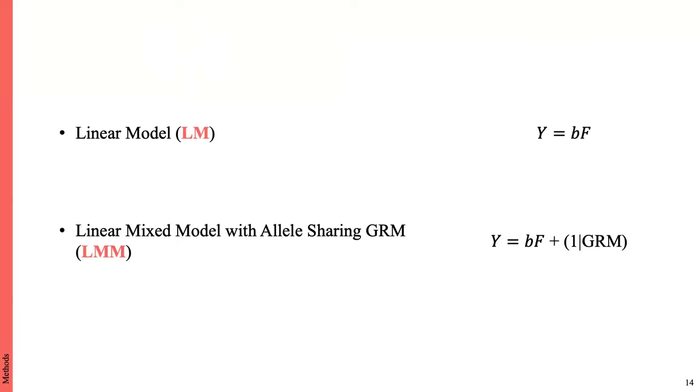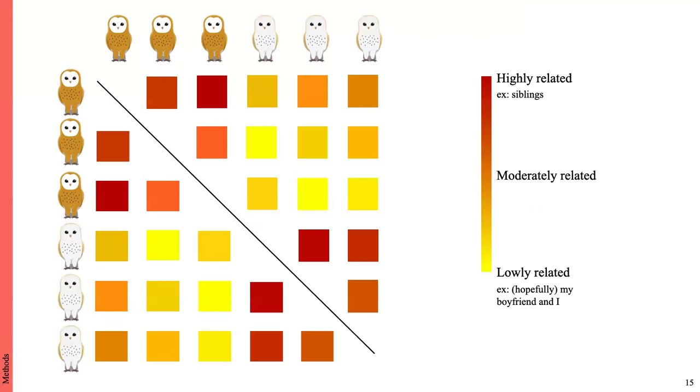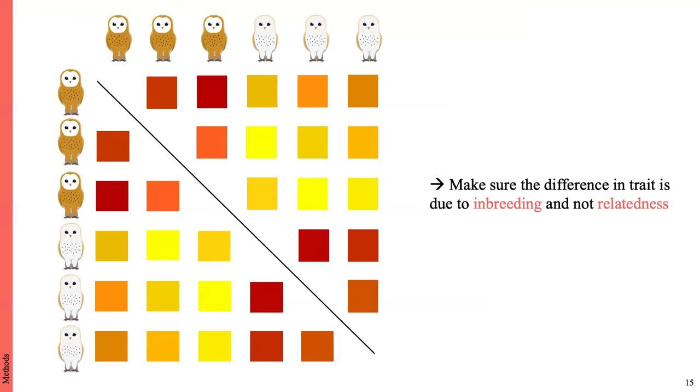The solution we propose in this paper to account for structure is basically a new model where we include the genetic relatedness matrix, so the GRM, as a random factor in the model. Briefly, a GRM is a matrix which summarizes the mean relatedness between each pair of individuals. By including this in the model, what we do is simply to make sure that the difference in traits we are measuring is due to inbreeding and not relatedness. So the question you are asking now is, are these people smaller because they are inbred, or are they smaller because their parents are smaller and they just transmitted the small genes to them?